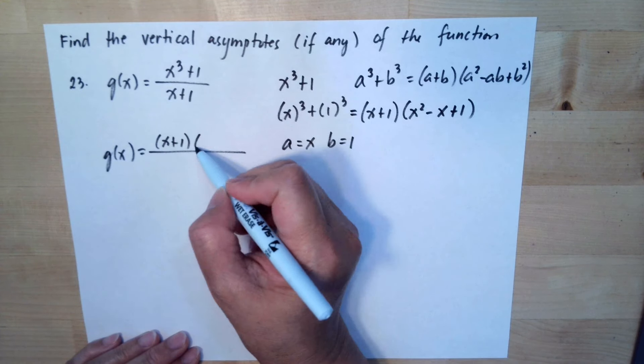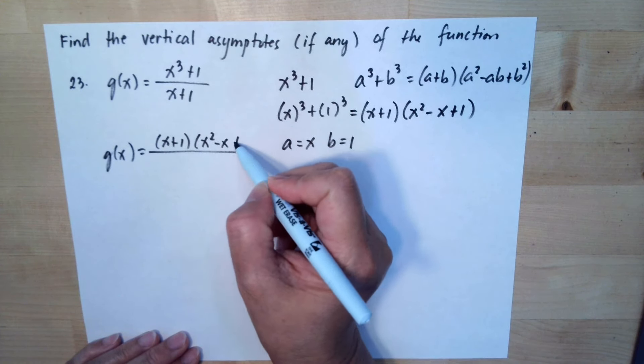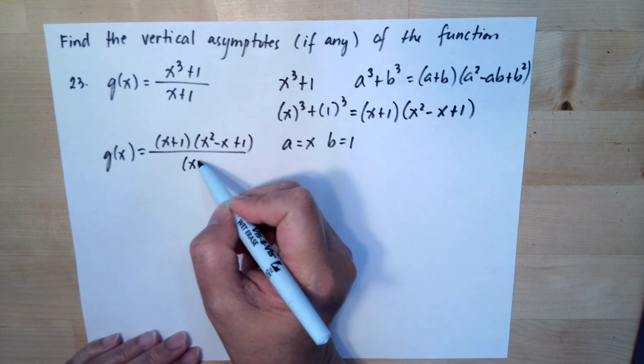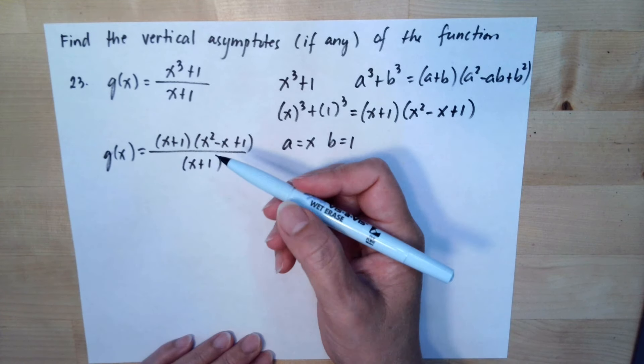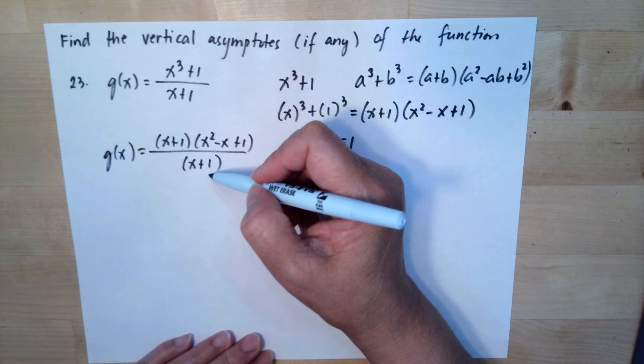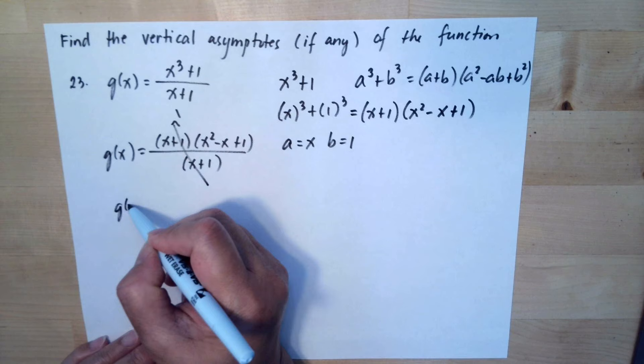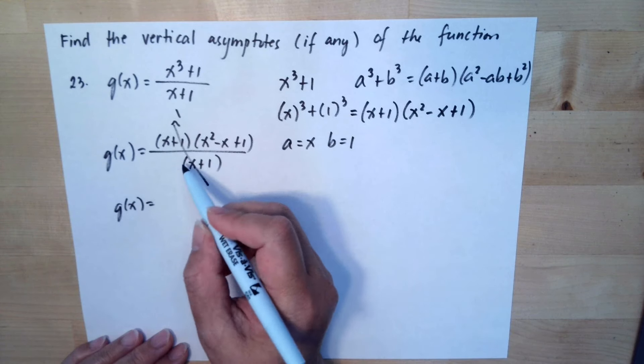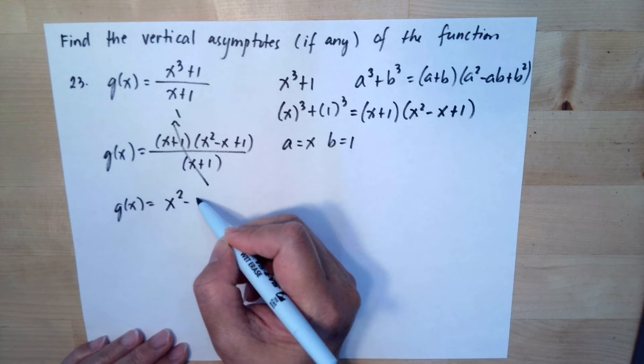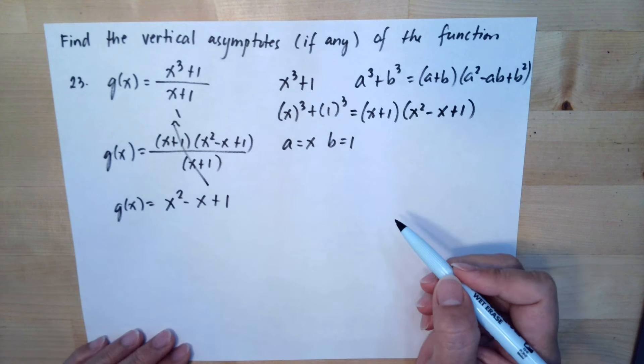So we can rewrite our function to x + 1 from here so we have (x² - x + 1) over (x + 1). So we can see the x + 1 and x + 1 in the denominator results to positive 1 so our simplified version of our function is x² - x + 1.